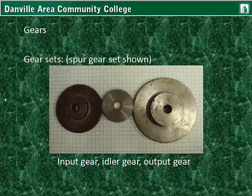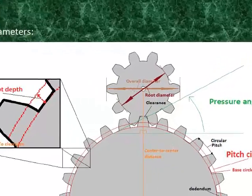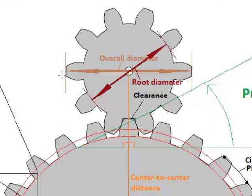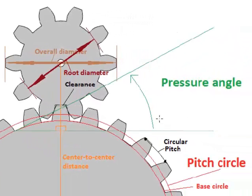Gear sets: here is the input gear, the idler gear, and the output gear. The idler gear does not affect the overall ratio — it just acts as an idler in between, so the output gear will turn in the same direction as the input gear. Regarding gear dimensions, the angle that the force comes into contact with the second gear is called the pressure angle.